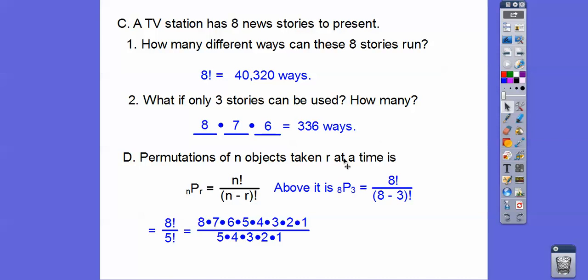Now, if you write them all out, 8 factorial is 8 times 7, 6, 5, 4, 3, 2, 1, and here's 5 factorial. Now watch. All of these 5, 4, 3, 2, 1s are going to cancel all of those 5, 4, 3, 2, 1s, and you're left with 8 times 7 times 6, okay?